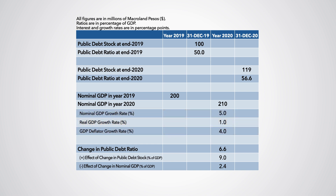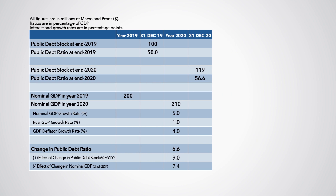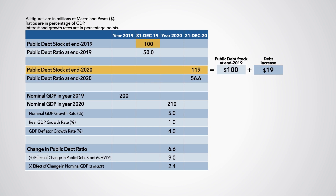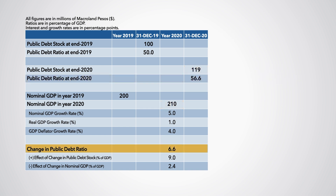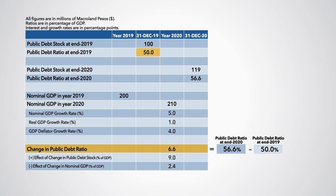During 2020, the public debt stock is projected to increase by 19 million. Therefore, the public debt stock at end of 2020 is projected to be 119 million, or 56.6% of GDP. Thus, during 2020, the public debt ratio is projected to increase 6.6 percentage points, from 50% to 56.6%.